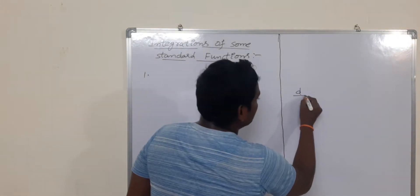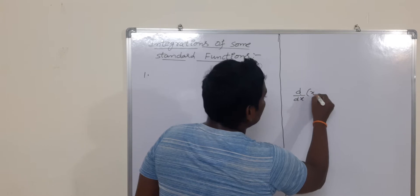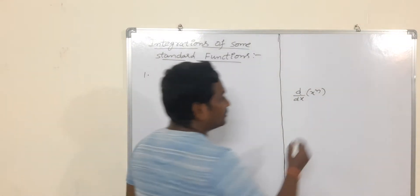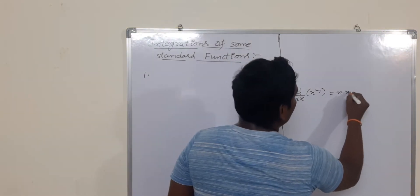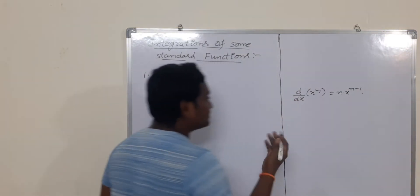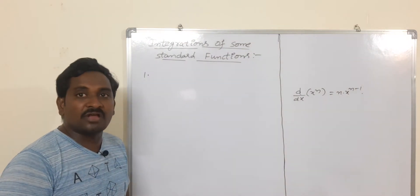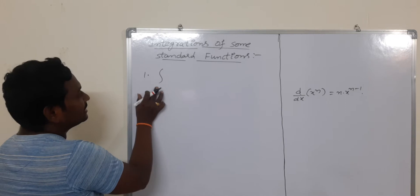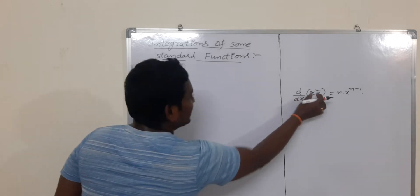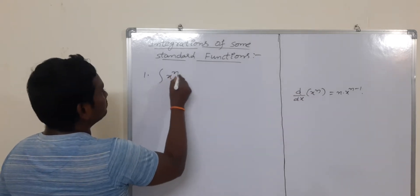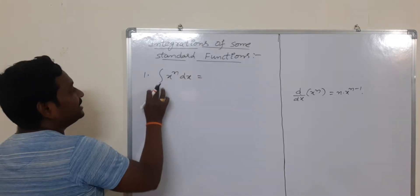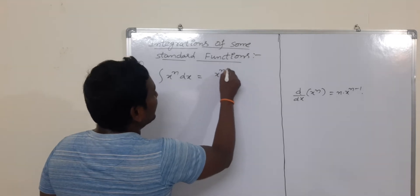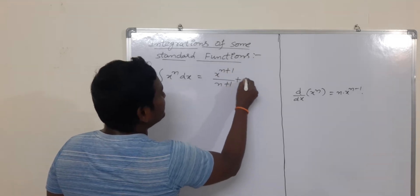In the case of differentiation, we already saw the formula for the derivative of x^n, which is n into x^(n-1). In a similar way, we are going to discuss the integration of x^n. The symbol of integration is the integral sign, and the function is x^n. So integration of x^n dx is equal to x^(n+1) divided by (n+1), plus c.